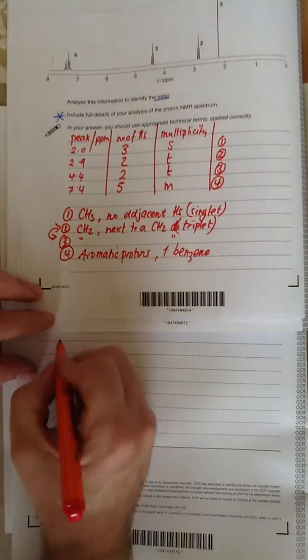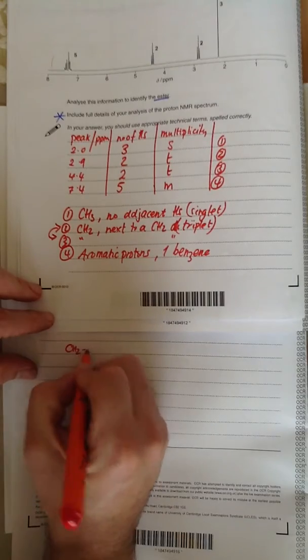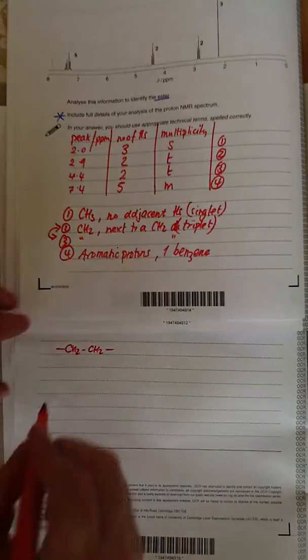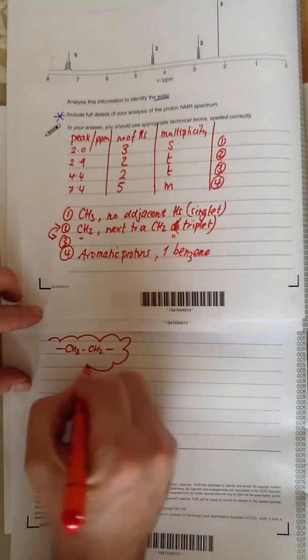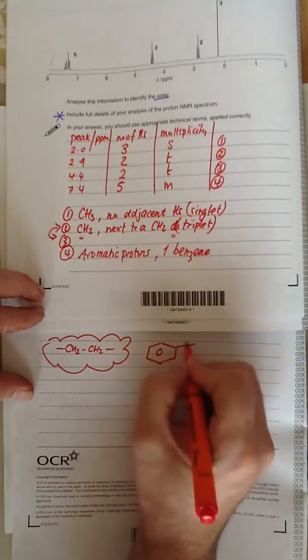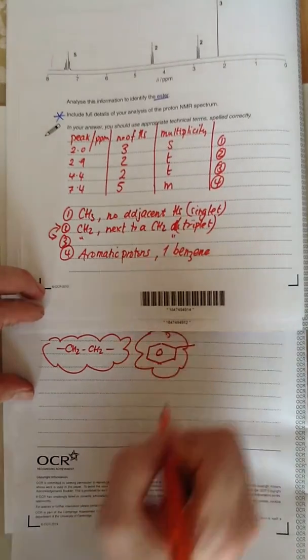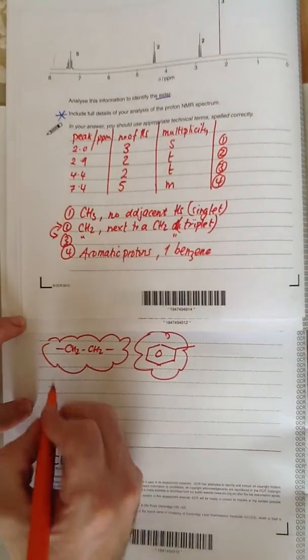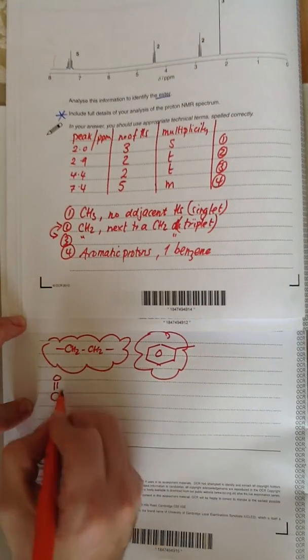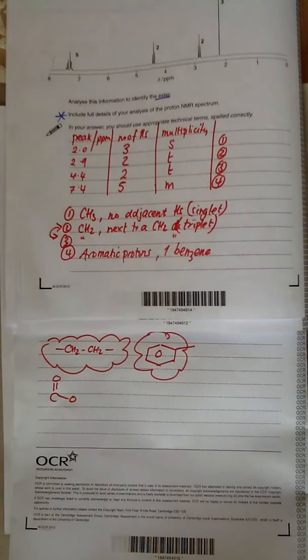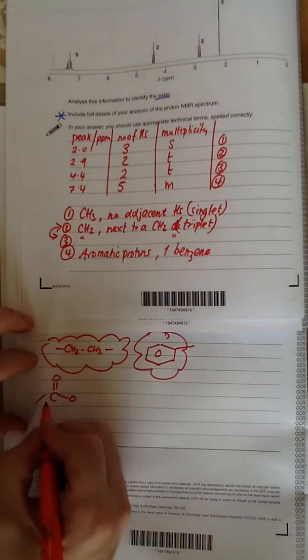It's also got a benzene ring in. We know it's an ester, because the question says identify the ester. Why doesn't that show up in the NMR? It doesn't show up in the NMR because there are no protons on that part of the group. There's no H's.